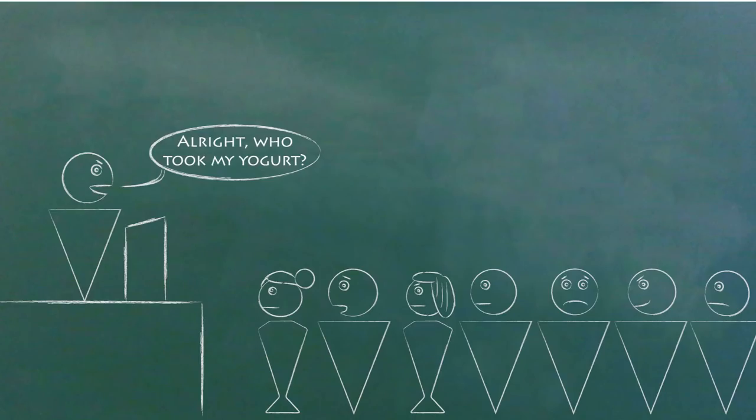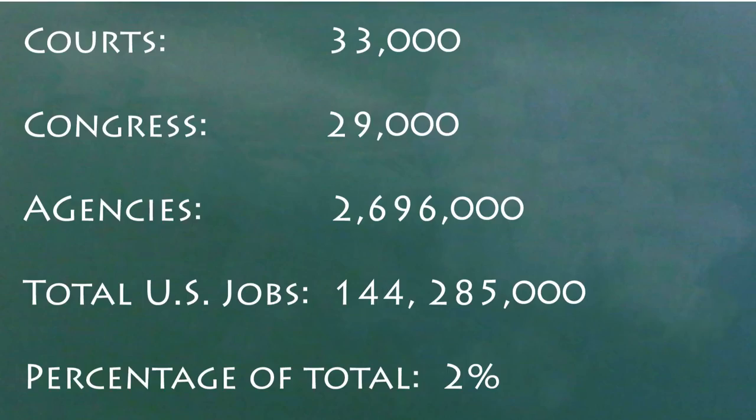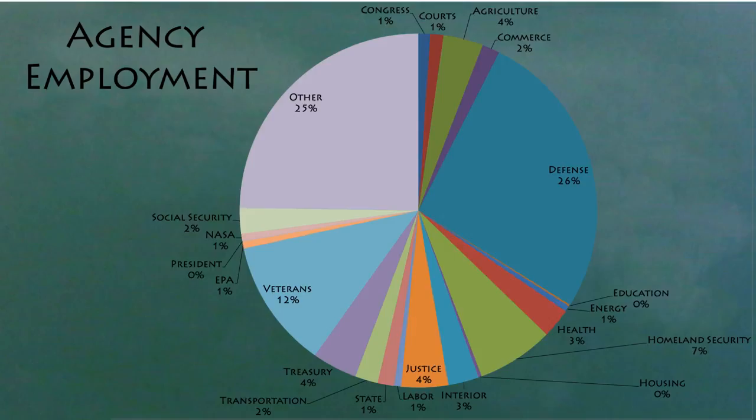Now, how many employees does the federal government have? We have figures from September of 2012. All of the employees in the judicial branch come to about 33,000. All of the legislative branch's employees come to about 29,000. All of the agencies in the executive branch together have about 2,696,000 employees. This is the breakdown by agency.